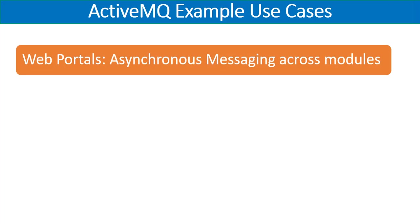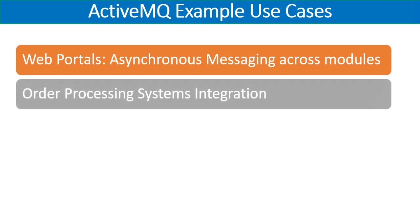One module produces messages and sends them to destinations such as queues or topics on Apache ActiveMQ, and another module receives the message. You might also have workflow mechanisms where messages are produced at one level of your workflow, consumed and processed by another application or module, which then produces another set of messages sent to another queue or topic — and so the sequence continues asynchronously.